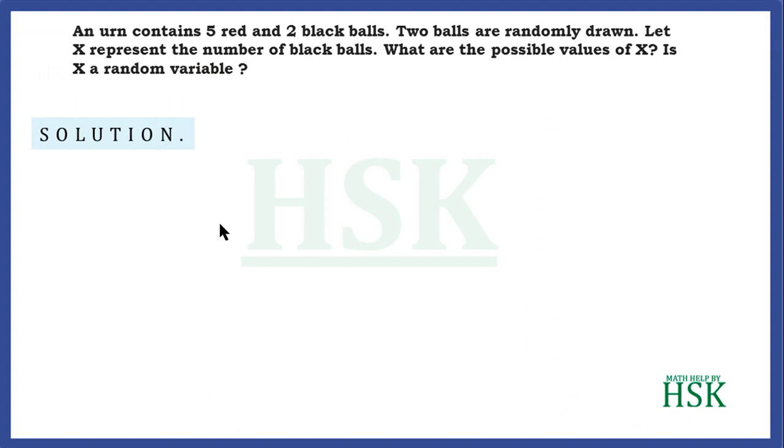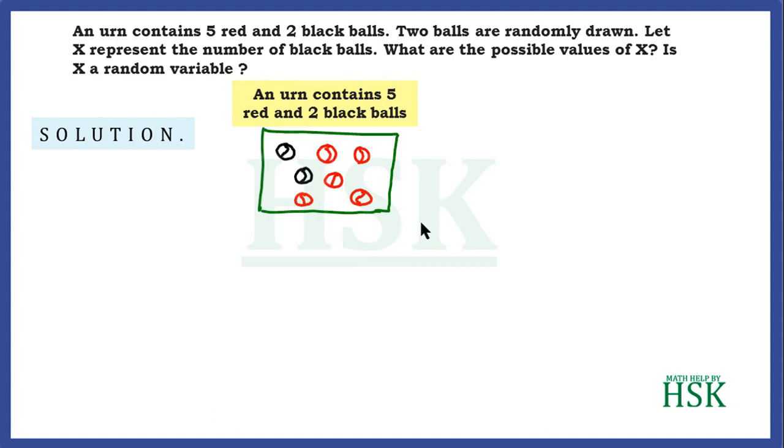To solve this question, first of all, we assume that we have an urn which contains five red and two black balls like this. And two balls are being randomly drawn.